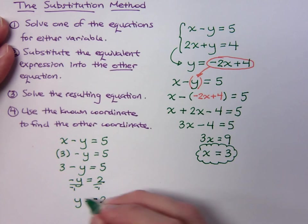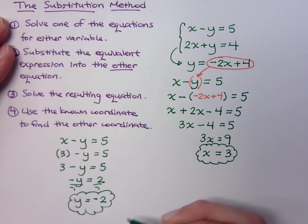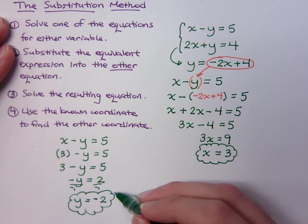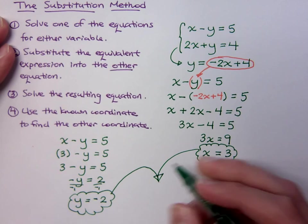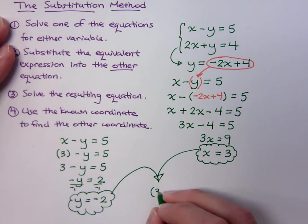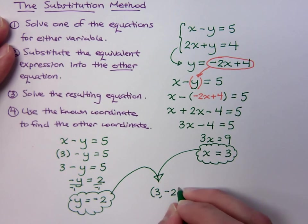So this, again, is not my answer. This is part of my answer. When I take my y value and my x value together, then that gives me the ordered pair 3, negative 2.